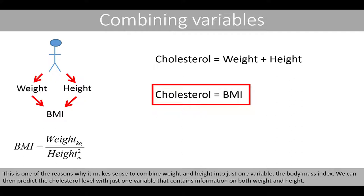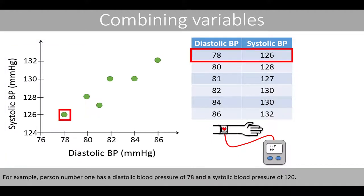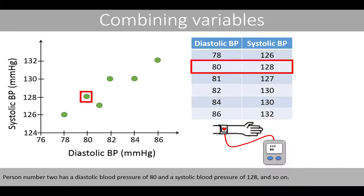This is one of the reasons why it makes sense to combine weight and height into just one variable, the body mass index. We can then predict the cholesterol level with just one variable that contains information on both weight and height. In this next example, we have measured the upper and lower blood pressure of six individuals. For example, person number one has a diastolic blood pressure of 78 and a systolic blood pressure of 126, and person number two has 80 and 128.